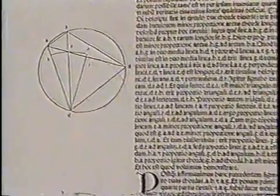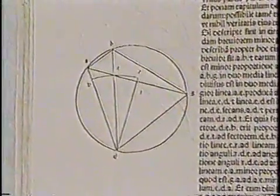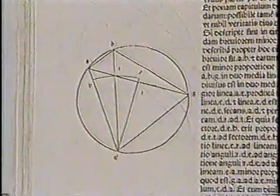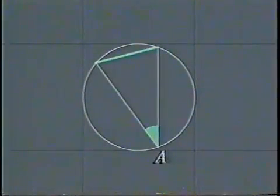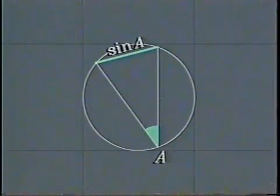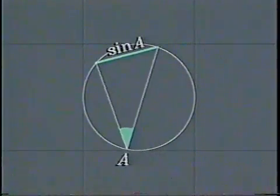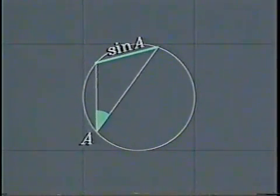In the Almagest, Ptolemy derived a basic formula for the length of a chord cut off by the sum of two angles. We can discover this formula ourselves from the property of chords of circles discussed earlier. Remember, in a circle of diameter 1, the length of any chord cut off by an inscribed angle is equal to the sine of the angle. So if this angle is A, the length of this chord is sine A, no matter where A lies on the circle.